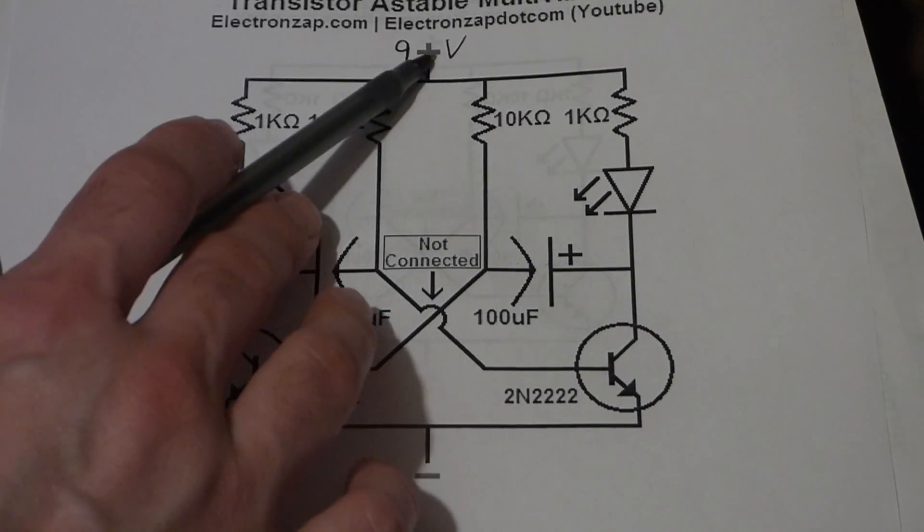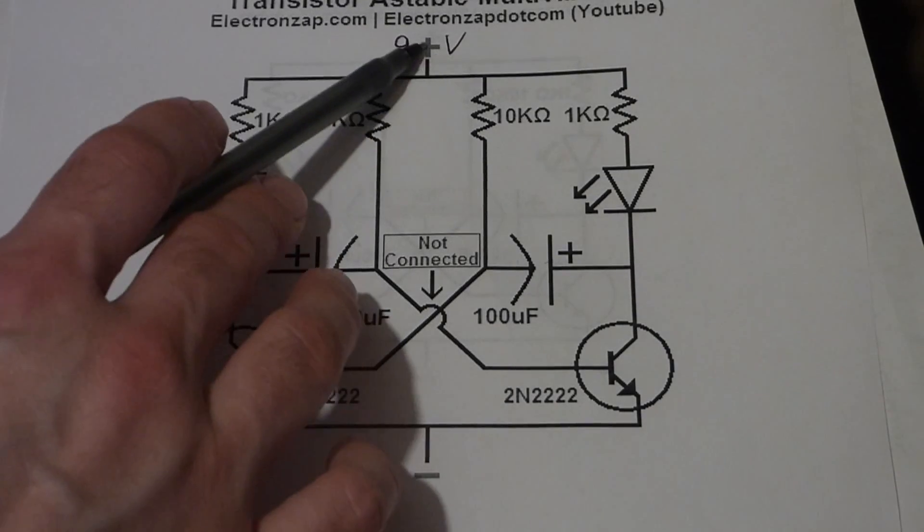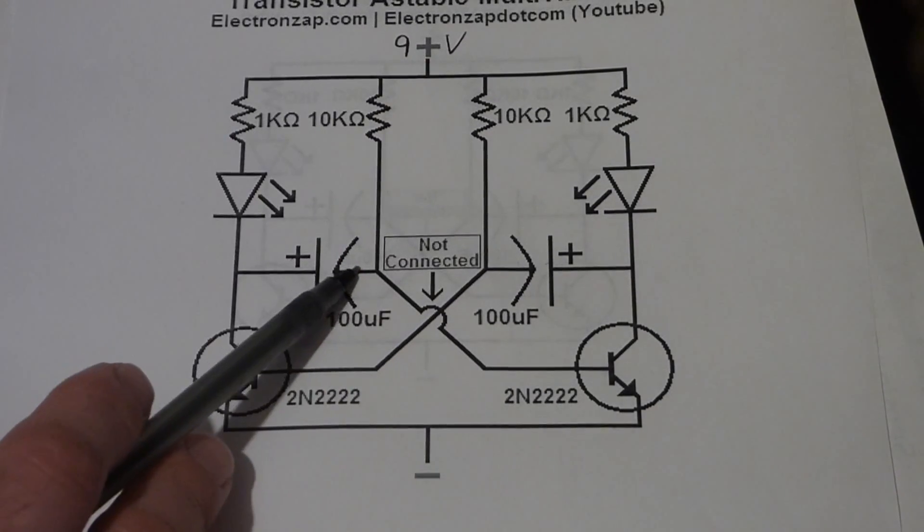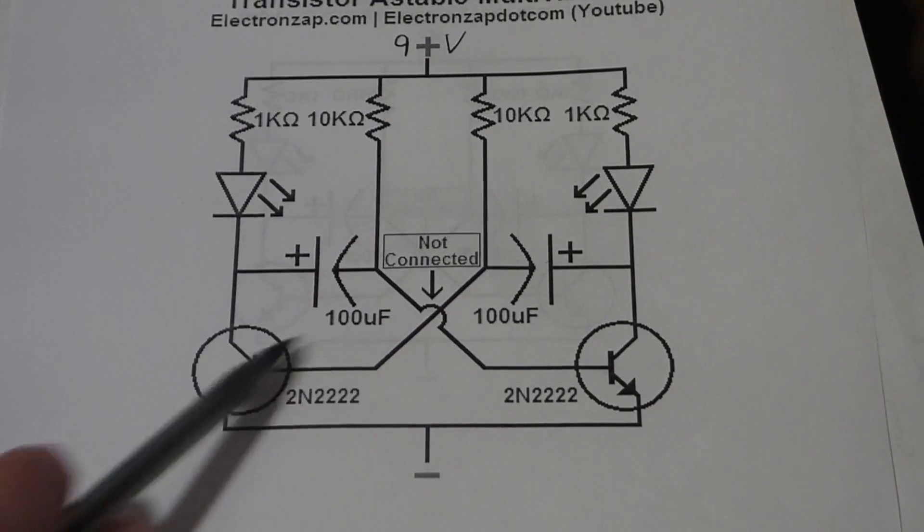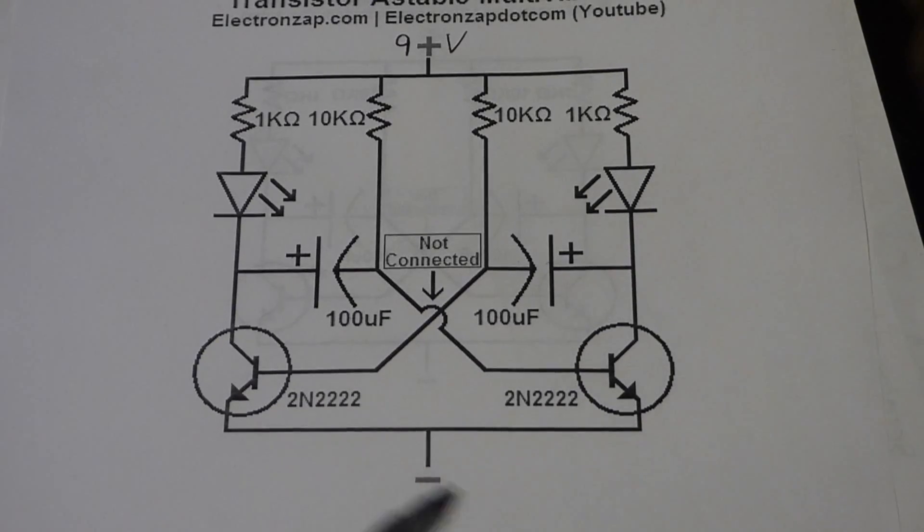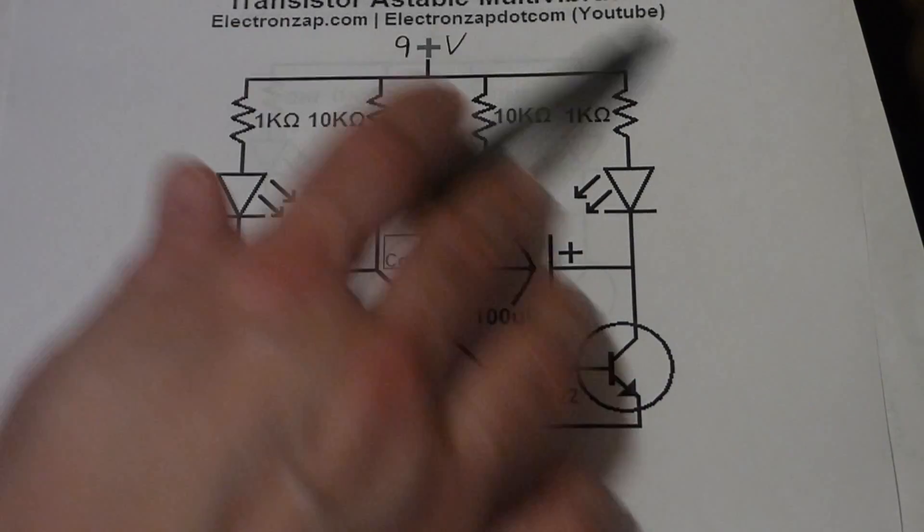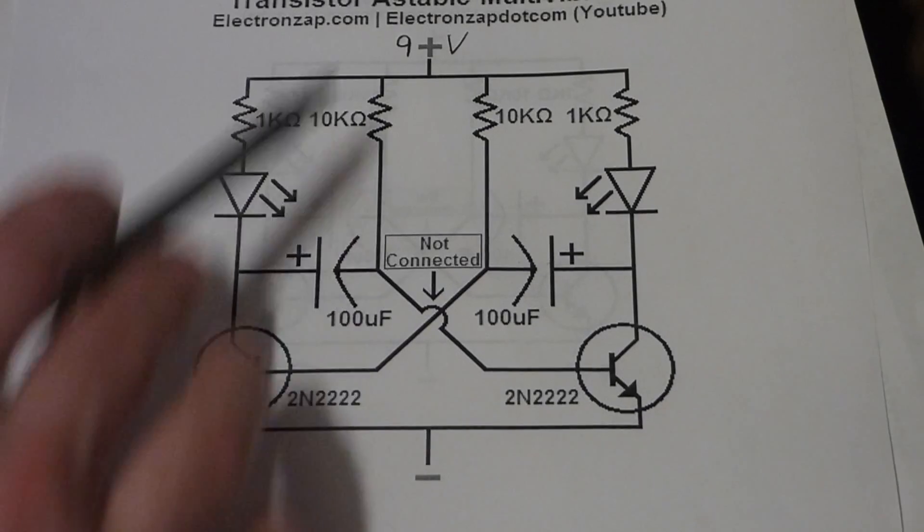But it can go up this way through the 10 kilo ohm resistor in this case to positive. So we have this drainage path. And then of course the battery that completes the cycle. It's pushing everything but I have it separated here.